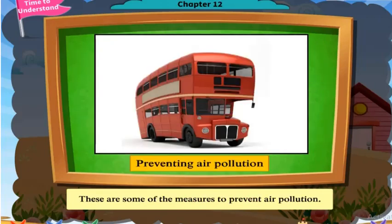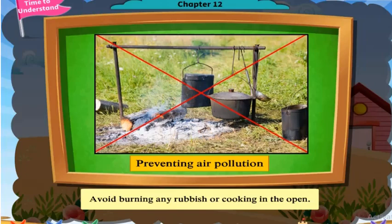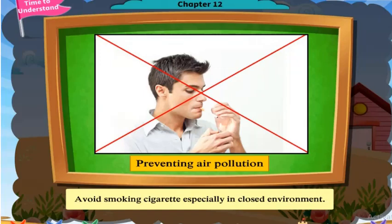These are some of the measures to prevent air pollution. Use public transport and avoid driving as much as possible. Avoid burning any rubbish or cooking in the open. Avoid smoking cigarettes, especially in closed environments.